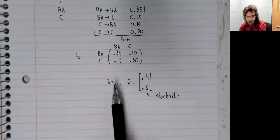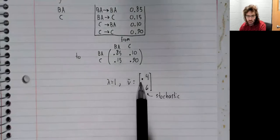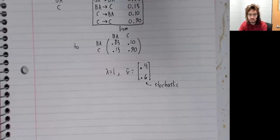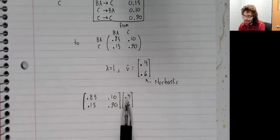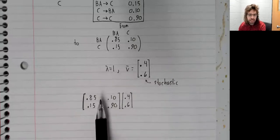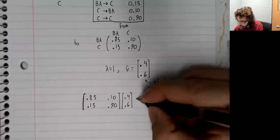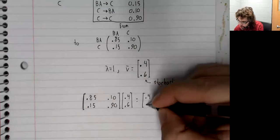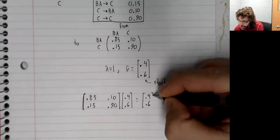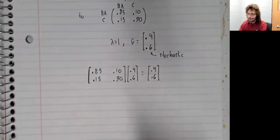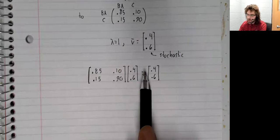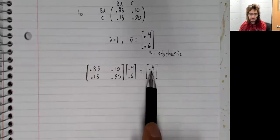This being an eigenvalue with this eigenvector tells us that if we take this vector and hit it with this transition matrix, nothing changes. A times V equals one times V.